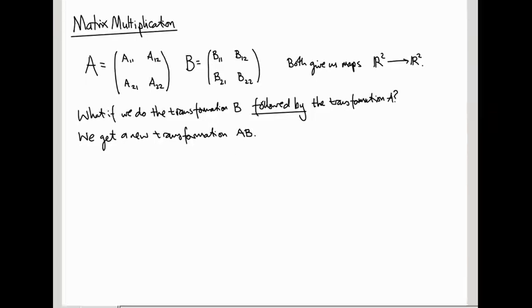So what do we get? Well, we get a new transformation. And I'm going to call this new transformation AB. So let's see what transformation AB is. Let's suppose I start with a vector XY, and I apply the matrix B. This gives me a new vector, which I'm going to write. I'm going to leave a gap here, because we're going to end up sticking A in here.